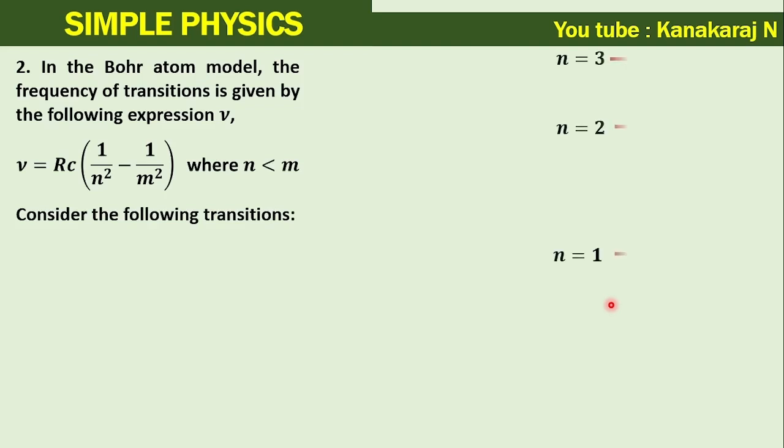Consider the following transitions. Three energy states are here. The first transition from energy state 3 to 2, then second transition is from state 2 to 1, third transition is from 3 to 1.